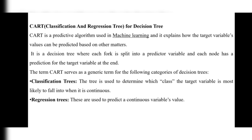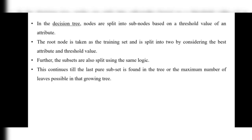The second category is Regression Trees. Regression trees are used to predict a continuous variable's value. In decision trees, nodes are split into sub-nodes based on the threshold value of an attribute.